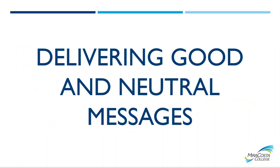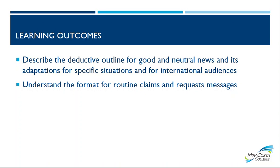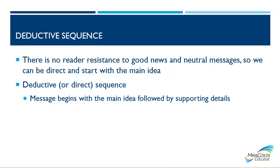So, delivering good and neutral messages. The learning outcomes for this lecture are to describe the deductive outline for good and neutral news and its adaptations for specific situations and for international audiences, and to understand the format for routine claims and requests messages — that would be for customer service type emails. A deductive sequence, which we also call a direct sequence: there is no reader resistance to good news and neutral messages, so we can be direct and start with the main idea.